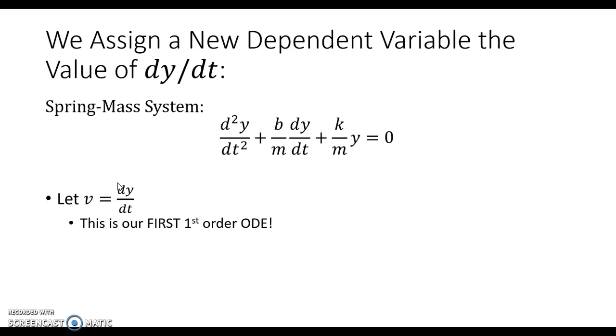So think about this in terms of like a skydiver. Not only is your position a function of time, but also the speed at which you're falling is a function of time as well. So those are both time dependent, i.e., dependent variables.